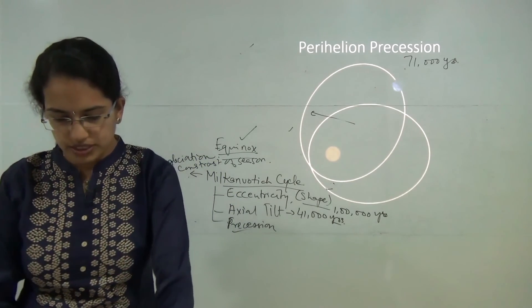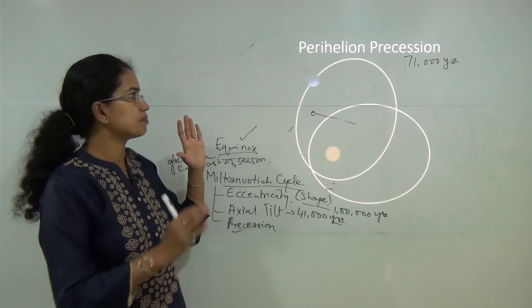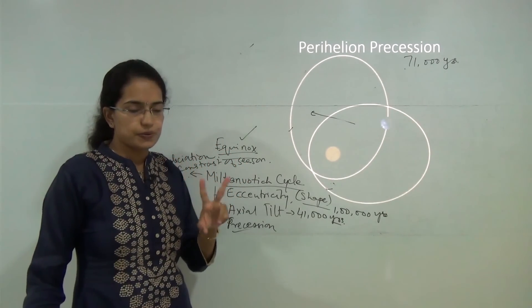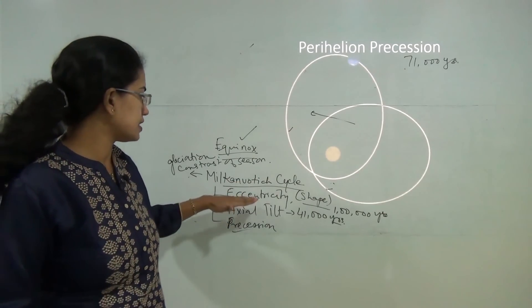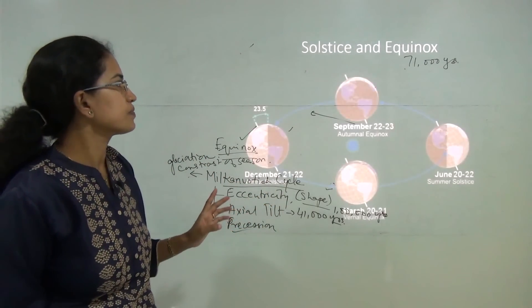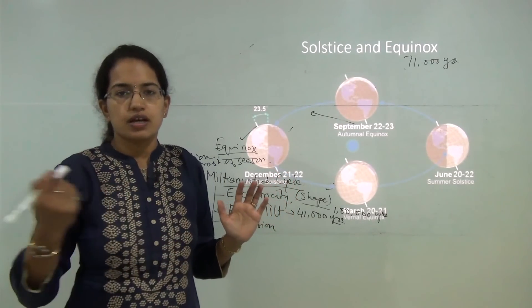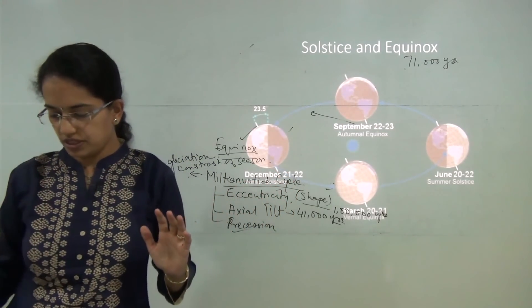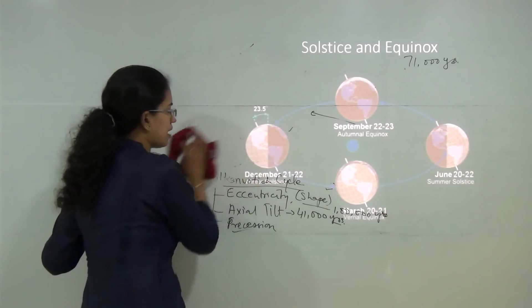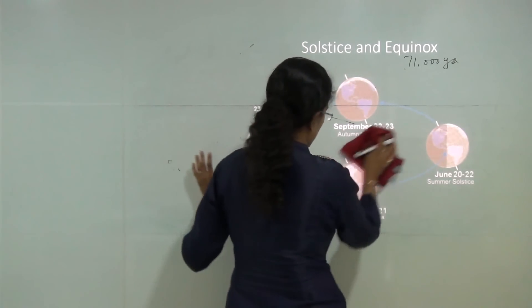That covers perihelion precession and the two types of precession. We will be covering the Milankovitch cycle in detail in a further lecture. The next important topic is that due to the revolution of the earth, you have seasons, and the solstices and equinoxes that occur.